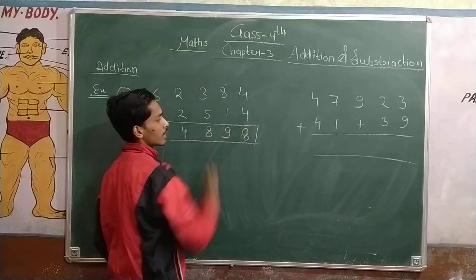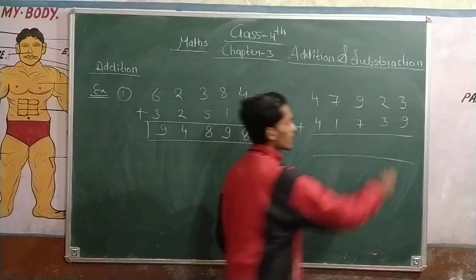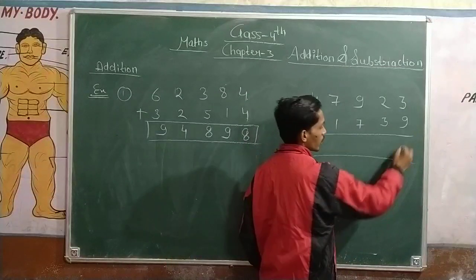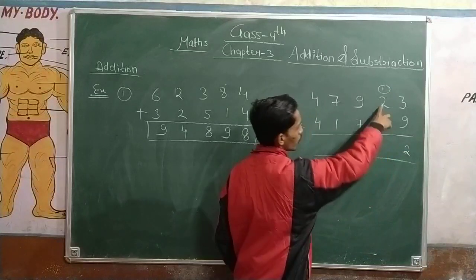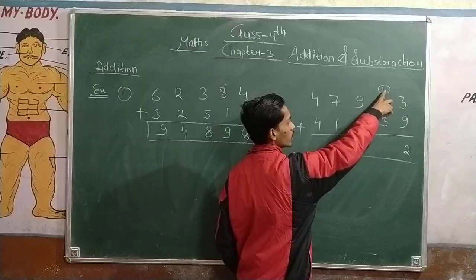You have to carry. Now you have to carry. 9 plus 3, 12. 2, carry 1. 2 plus 3, 5, or with carry 6.